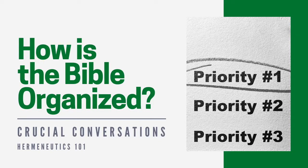The New Testament has three main sections. The first section is the Gospels — four books named after four guys: Matthew, Mark, Luke, and John. The easy thing about the Gospels is we just put the author's name right on top of them. Matthew wrote Matthew, Mark wrote Mark, Luke wrote Luke, and John wrote John. That's the first section of the New Testament.